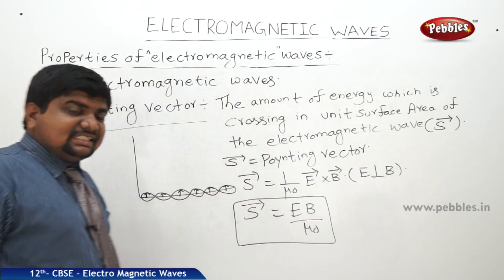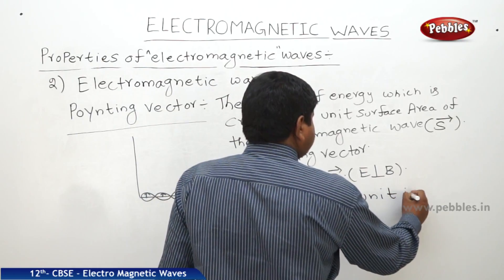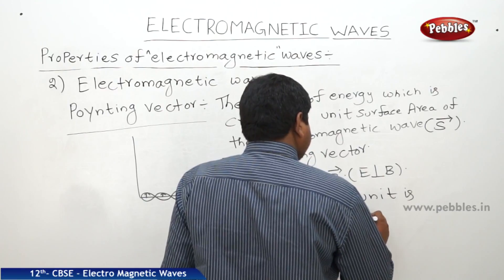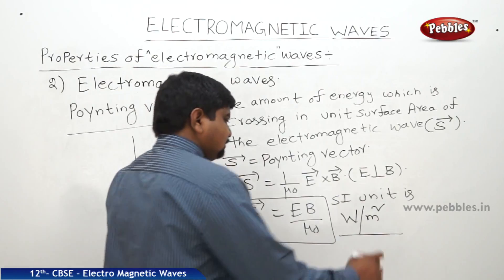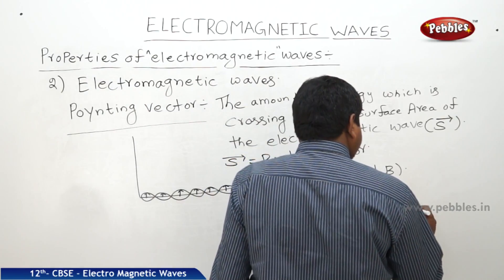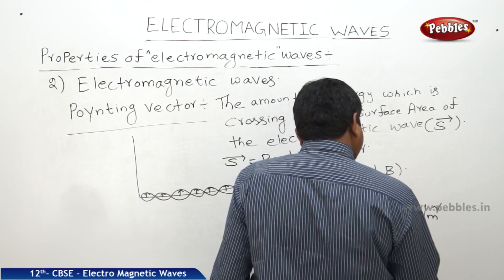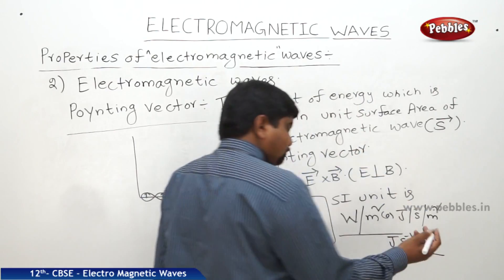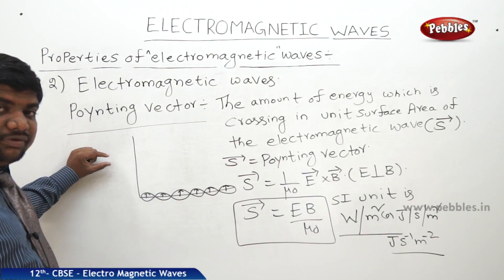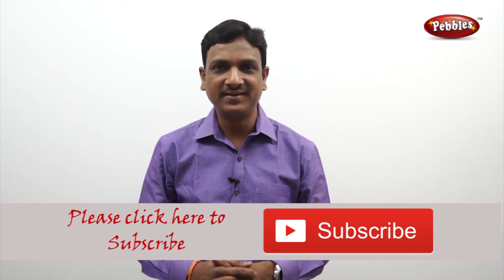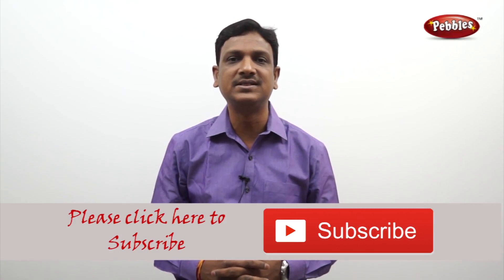The SI unit of the Poynting vector is watts per meter squared, which can also be written as joules per second per meter squared. This is a small introduction and explanation of the Poynting vector. If you like this video, please give a thumbs up and subscribe to the channel for more videos on the CBSE syllabus.